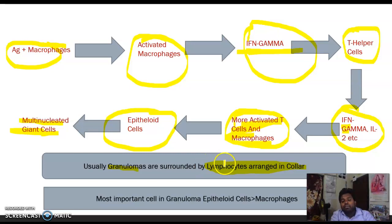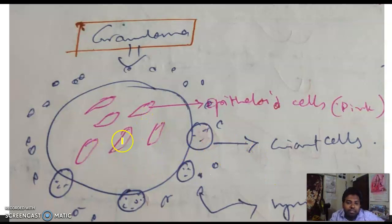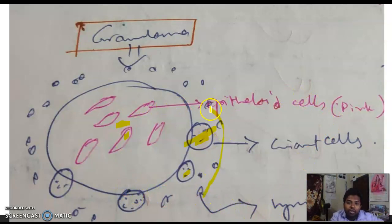Sarcoidosis granuloma is therefore called a 'naked granuloma.' The most important cell in a granuloma is the epithelioid cell — more than macrophages. In the schematic diagram of a granuloma, epithelioid cells are in the middle, with caseous material possibly present. Around them are a few giant cells with huge cytoplasm and multiple nuclei.